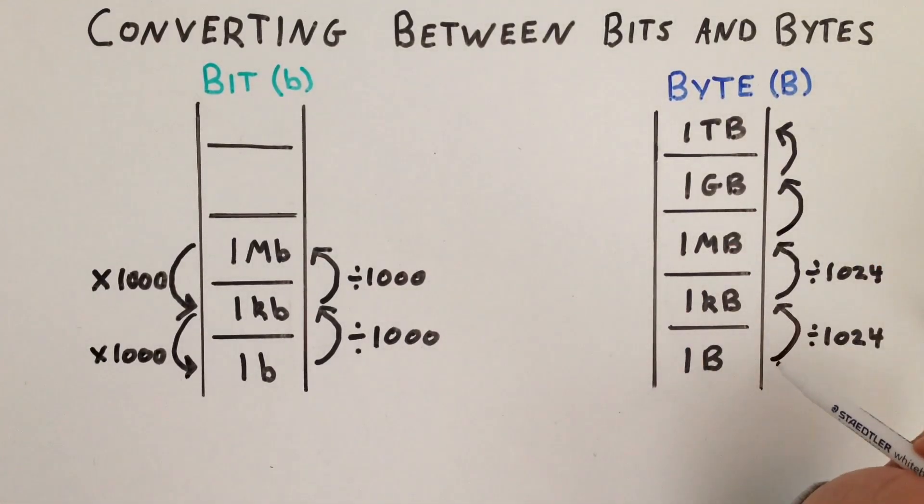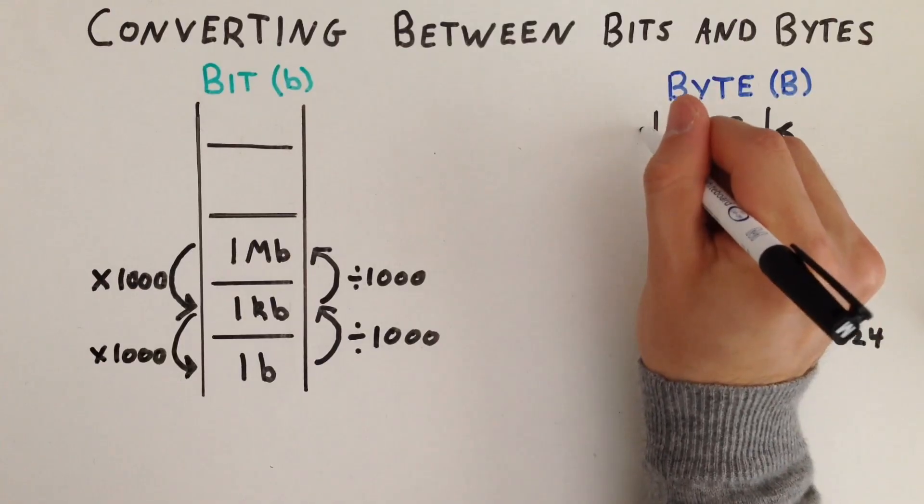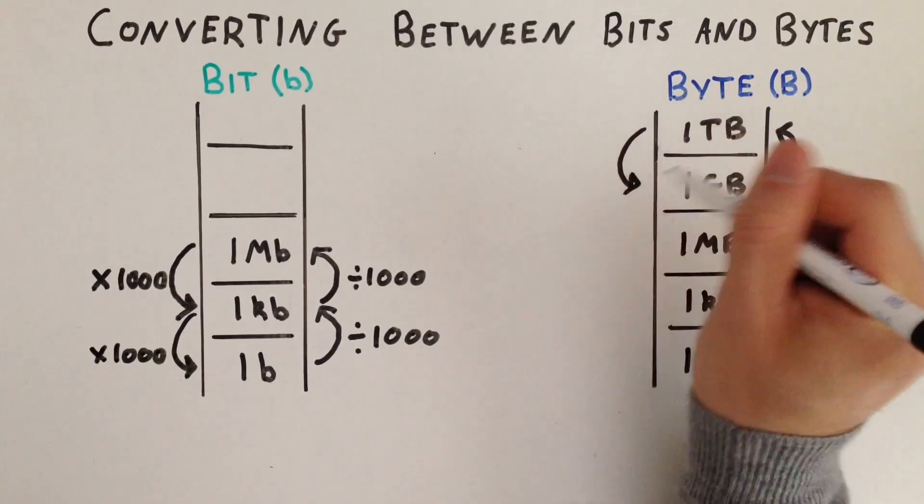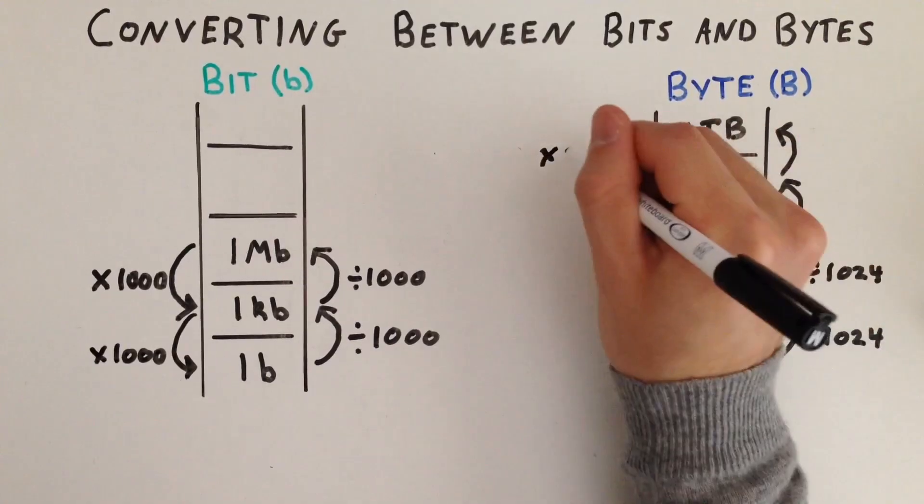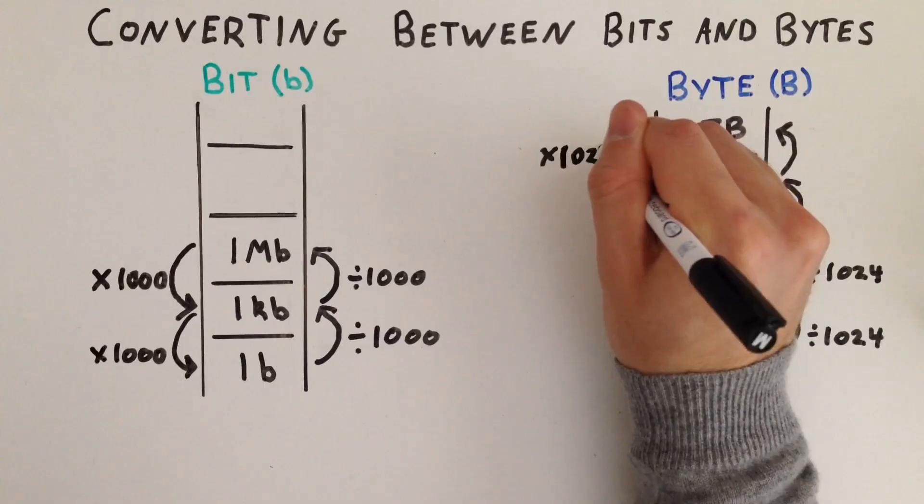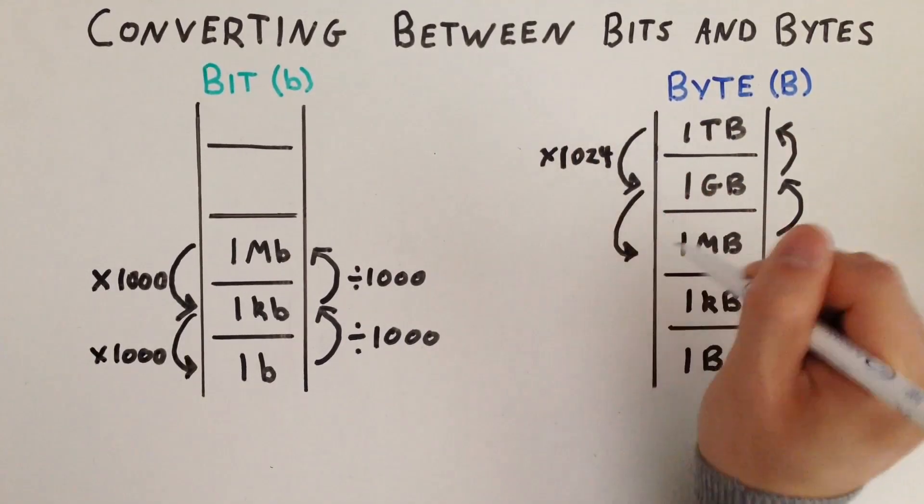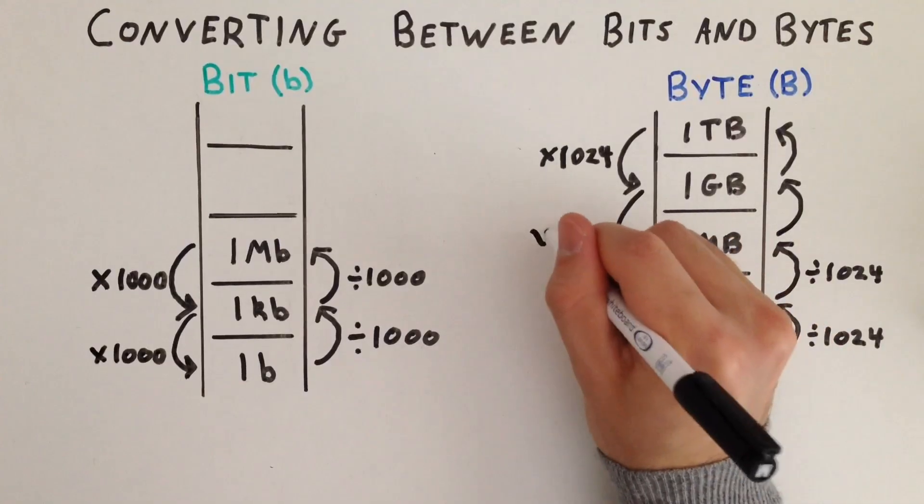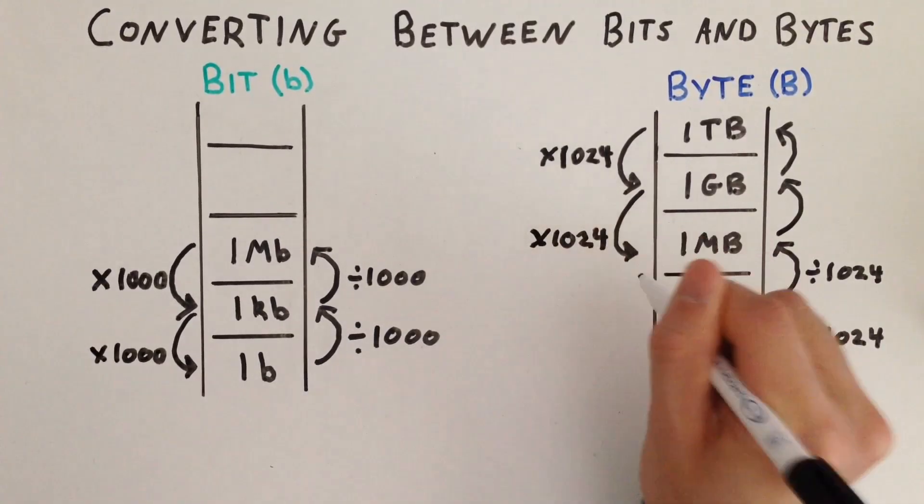So if we're dividing when going up the ladder, we multiply to go down. So 1 terabyte equals 1 times 1,024 gigabytes. Again, 1 gigabyte equals 1 times 1,024 megabytes, and so on.